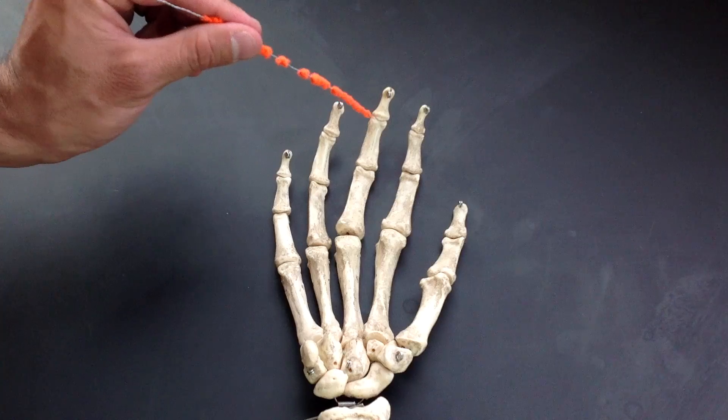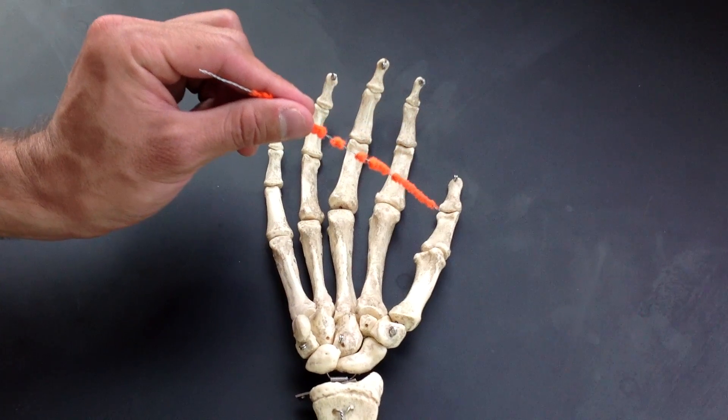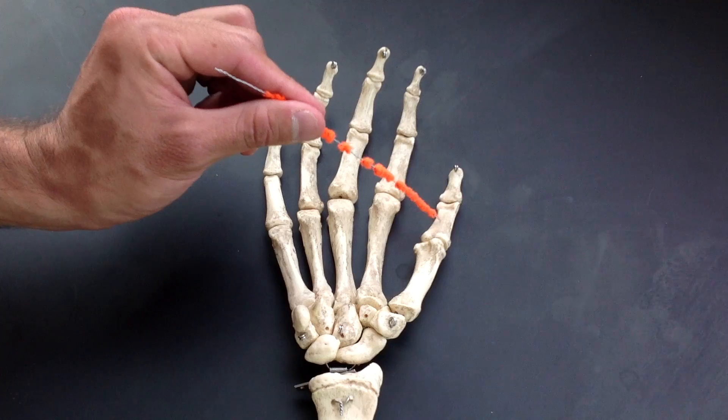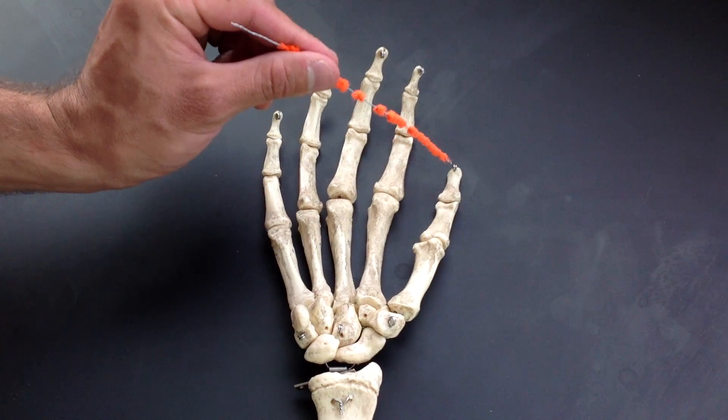The same is for the third, fourth, and fifth. However, on the pollex, or thumb, you only have a proximal phalanx and a distal phalanx.